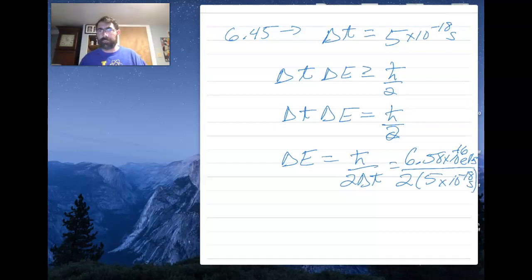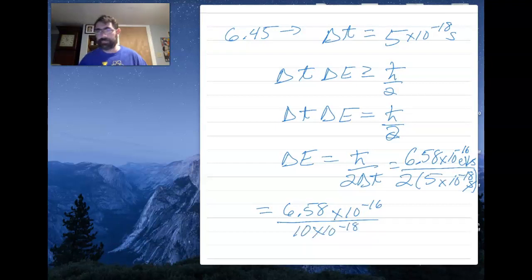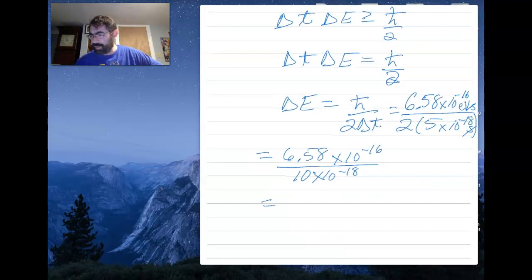So the seconds cancel and what we're left with is 6.58 times 10 to the minus 16 divided by 10 times 10 to the minus 18, which is essentially 10 to the minus 17. So what I get is 6.58 times 10 to the minus 16 plus 17 eV, which equals 6.58 times 10 to the 1 eV or 65.8 eV.